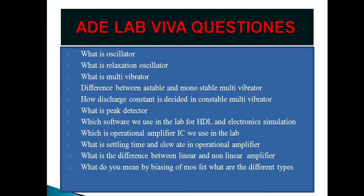What is settling time and slew rate in an operational amplifier? I have already explained. What is the difference between a linear and nonlinear amplifier? A linear amplifier is the one which amplifies the signal with a particular gain factor. A nonlinear amplifier amplifies the signal with a different gain factor. That is called nonlinear and linear.